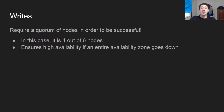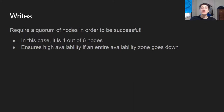A write requires a quorum of nodes to work. The database node receives a write on the caching layer, gets its write-ahead log entry, and sends that to all six nodes in the protection group. Once it gets positive responses from four of them, the write is considered committed. This ensures high availability if one of those zones goes down.